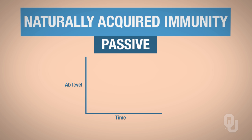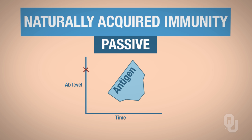Looking at our axes: time is on the x-axis, and antibody level is on the y-axis. When mom gives birth to you, your antibody level is going to be high at birth — think of time zero as birth. However, you have never been exposed to this antigen, so your body has no memory cells and no B cells to this particular antigen. Over time, that antibody level is going to drop, because antibodies don't live forever. That's passively naturally acquired immunity.